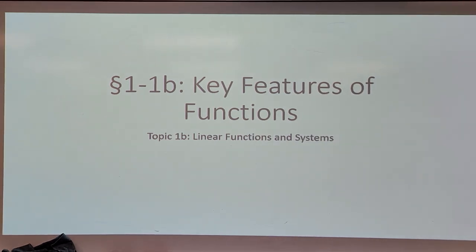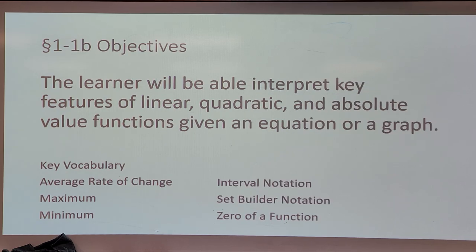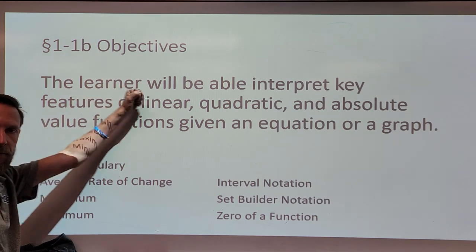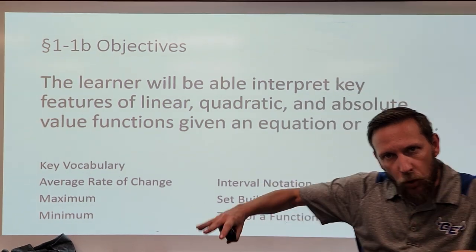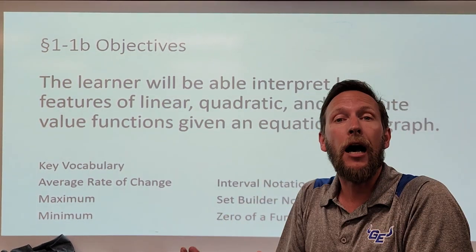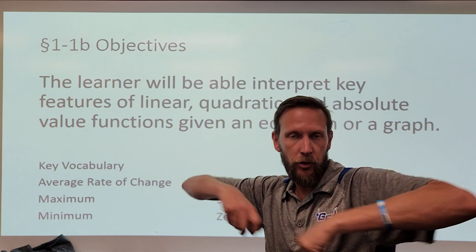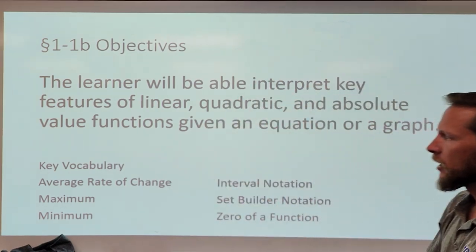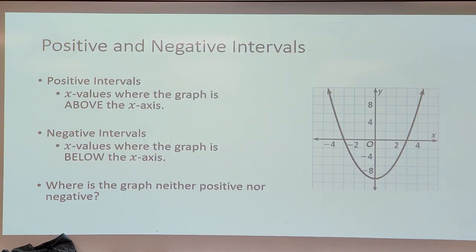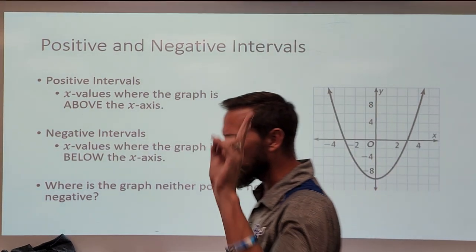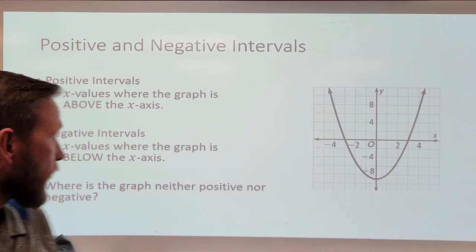For lesson two, the second part of our unit, we're going to focus on the average rate of change. We're going to talk about using those intervals to describe increasing and decreasing functions. We're still focused on those key features — it's really the same objective. We're going to apply what we know: set builder notation, interval notation, and finding the slope of a graph or between two points.